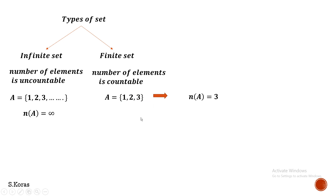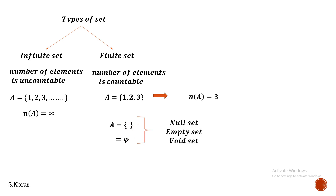Another example: A = {} — the empty set, also represented by the Greek letter phi (∅). There are no elements inside, so N(A) = 0. This empty set can also be called a null set or a void set. So based on cardinal numbers, we divide sets into two types: infinite and finite.